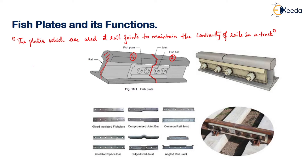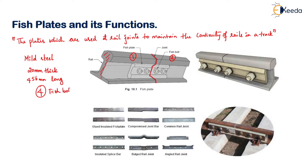These fish plates are usually made up of mild steel material, and normally they are 20 mm thick and 466 mm long. These are provided with 4 fish bolts. The thickness is 20 mm and the length is the normal general length that most of them are found in. These 4 fish bolts are connected, and normally these fish bolts are of diameter 25 mm.